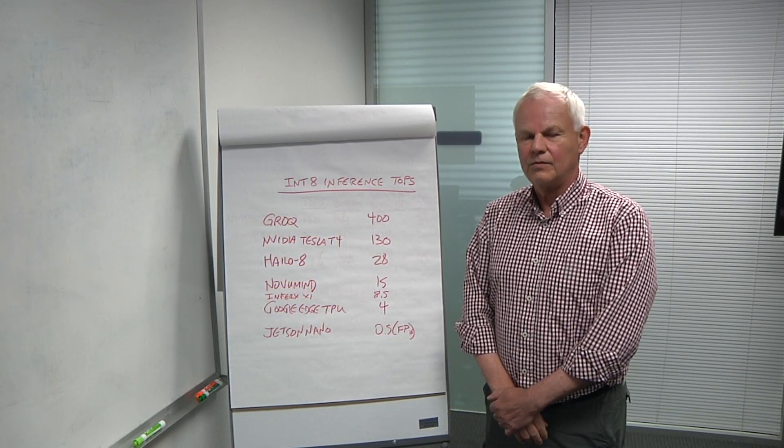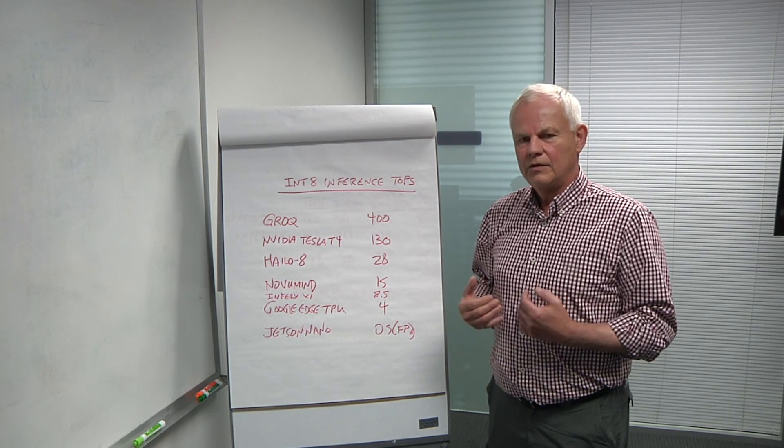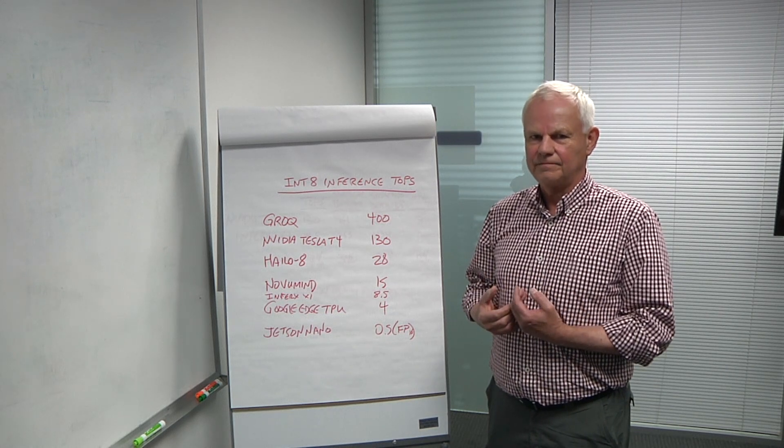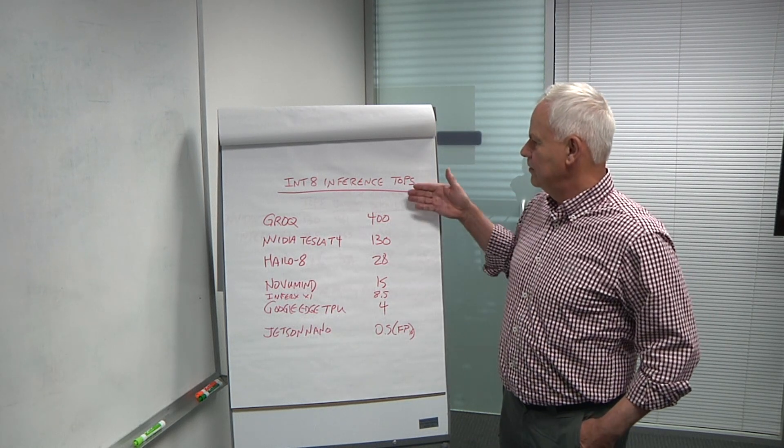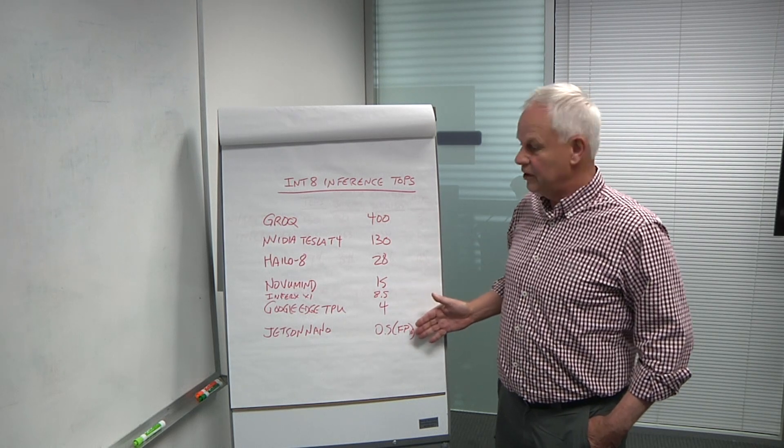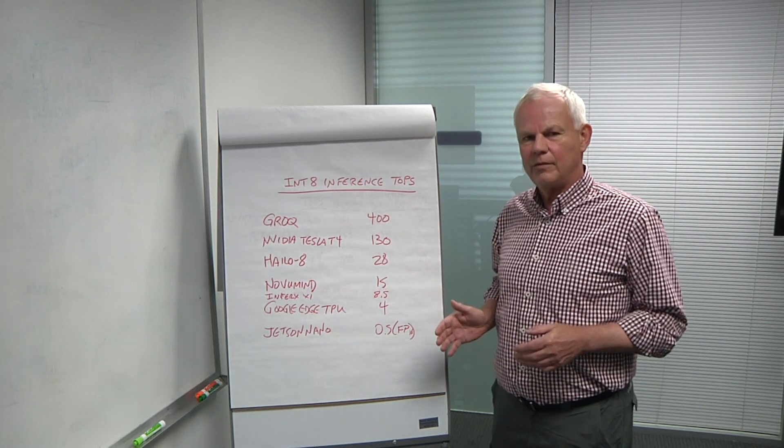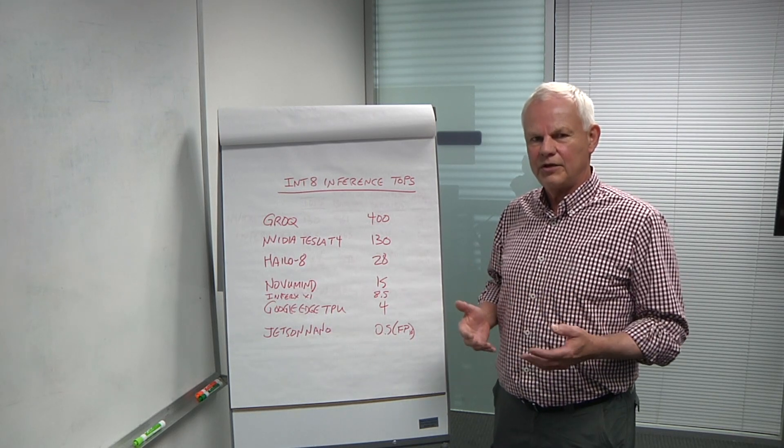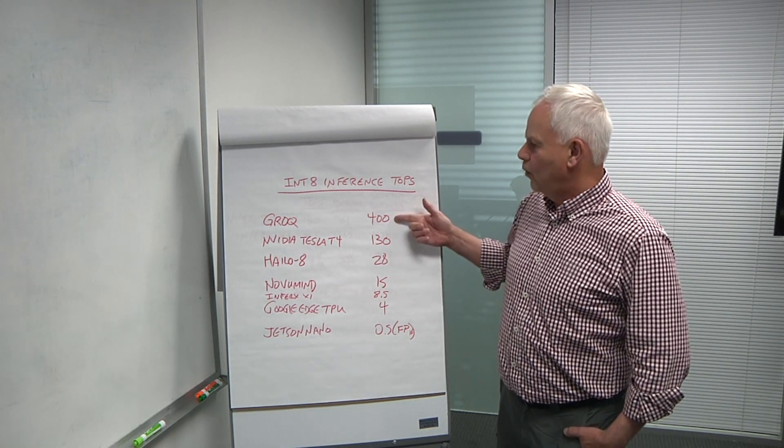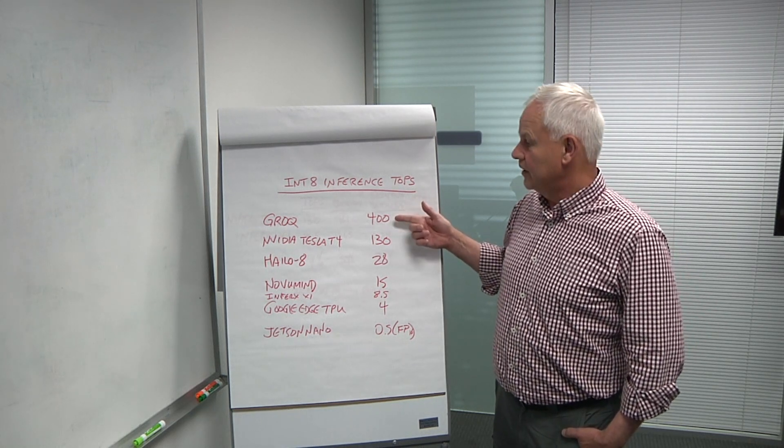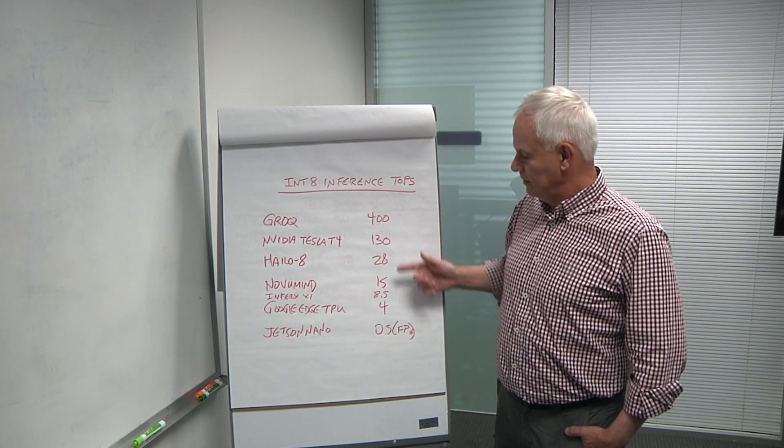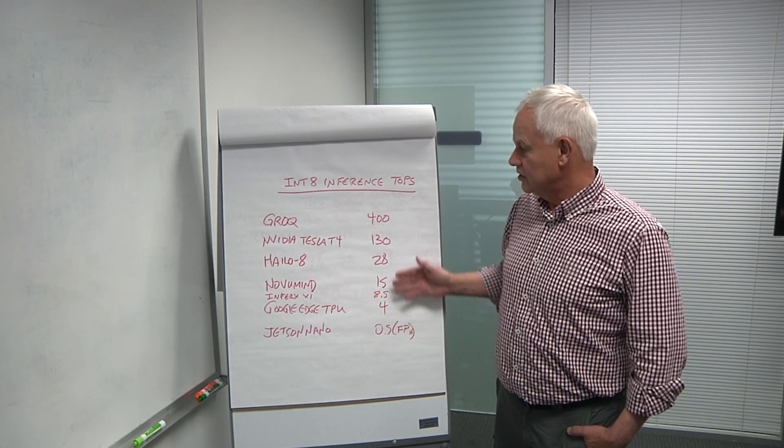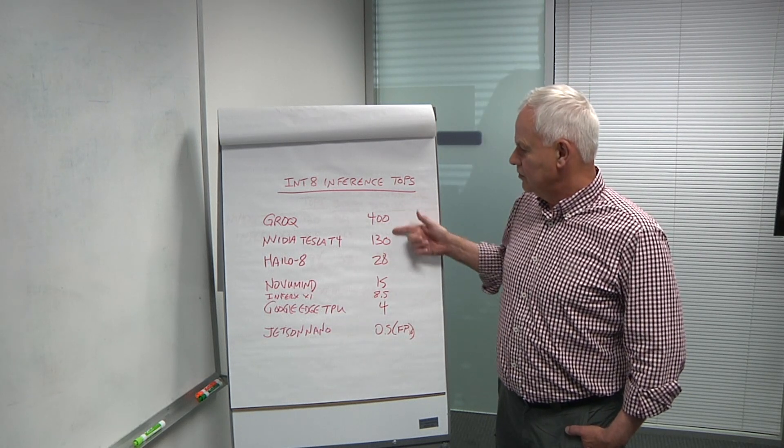So why don't you walk us through TOPS? Well, we defined what TOPS are. So what I want to do is show you how, if you just use TOPS as an indicator, you're not looking at the right thing. Here are some companies that have published TOPS information. There's a wide range of throughput that people are looking at. Somebody like Grok is clearly going after the data center. People like Google Edge TPU and Jetson Nano are going for the edge, and some others are going in between.